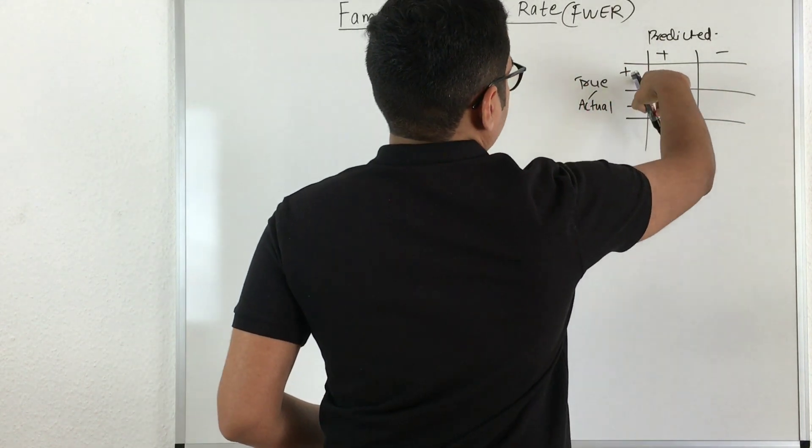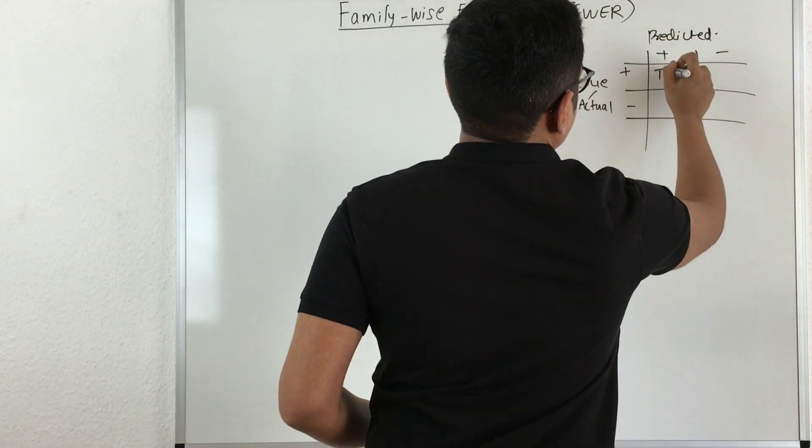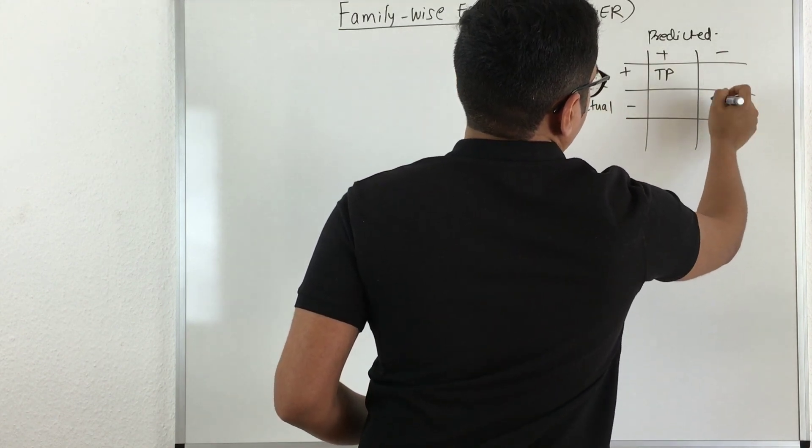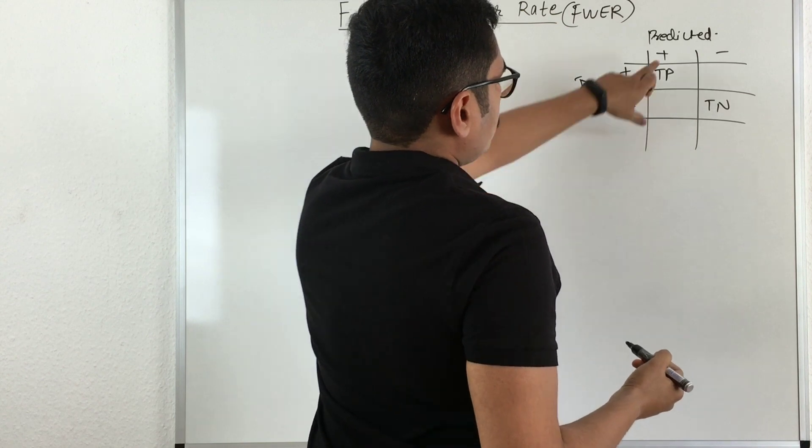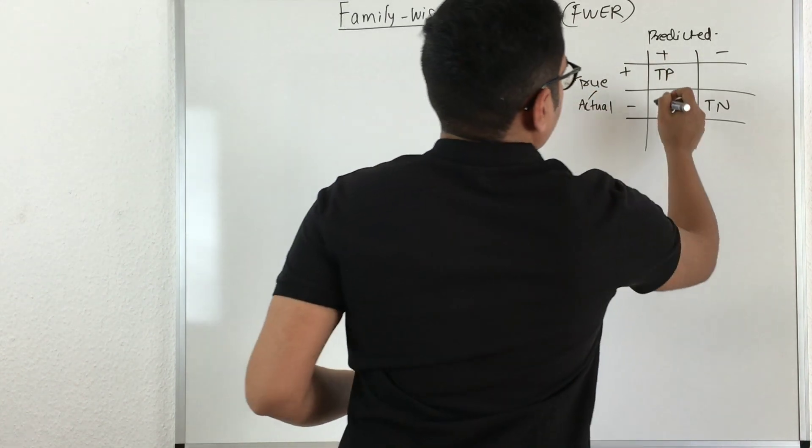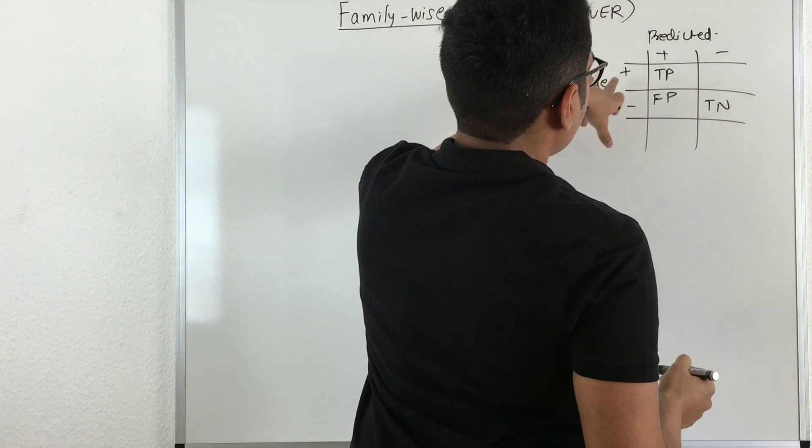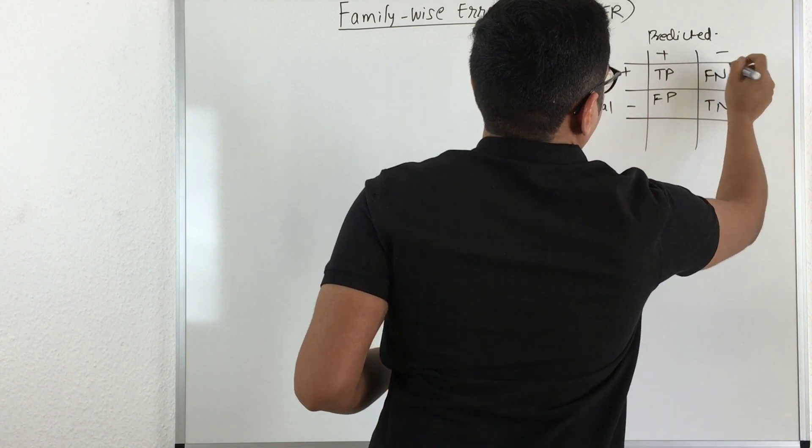So when both the true class is positive and predicted class is positive, we get true positive, and similarly if both are negative, you get true negative. When the true class is negative but the predicted is positive, you get false positive, and when the true class is positive and predicted is negative, you get false negative.